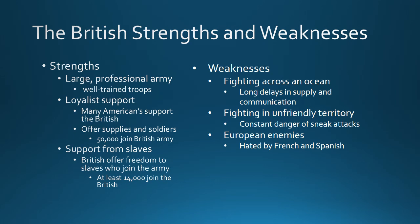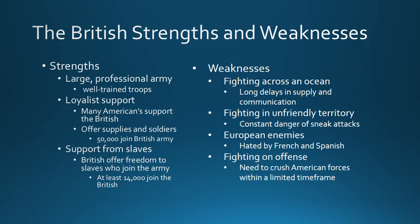Britain, during its rise to power over the last two centuries, had created enemies in Europe. They were hated by both the French and the Spanish, which meant they had to be careful during the war with America because France or Spain might attack them at any moment. This meant they couldn't use all of their military strength just on America. Finally, the British were fighting on offense — they needed to crush the American forces entirely in a short time frame, not just win a few victories, because they could not afford a prolonged war while also worrying about possible conflicts with France or Spain.